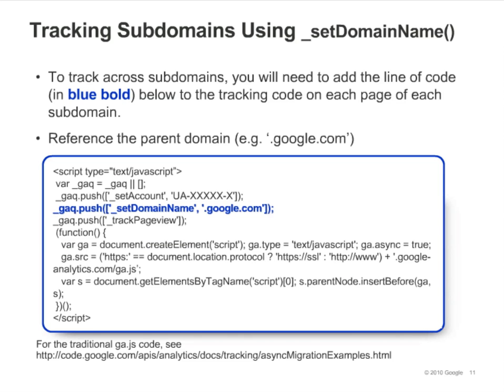To track across multiple subdomains, call setDomainName and specify your parent domain name as the argument. This will allow the Google Analytics tracking code to use the same cookies across the subdomains. For example, to track across Google's various subdomains, you would call setDomainName with an argument of .google.com. A side effect of using this method is that your reports may not differentiate between visits to identically named pages within the various subdomains. For example, visits to maps.google.com/home.html and mail.google.com/home.html would be interpreted as visits to a single page. To correct this, you'll need to set up an advanced filter.